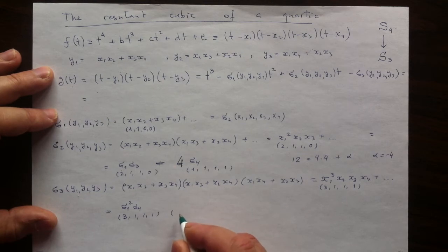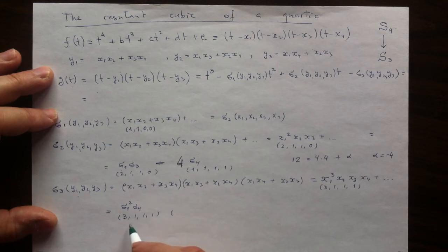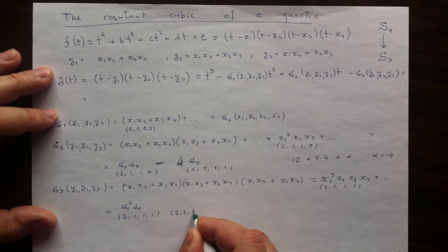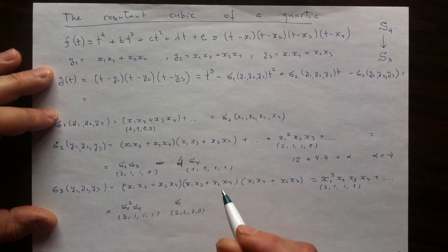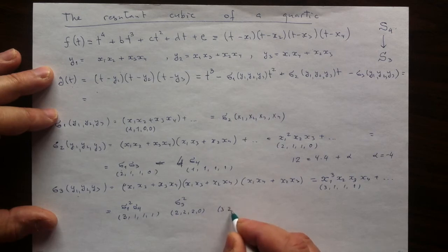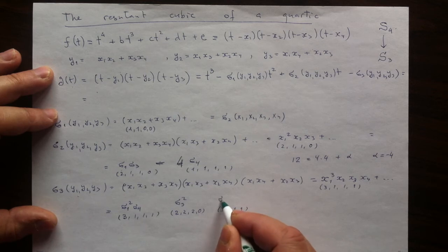For the template, I have 3 and 1 and 1 and 1, giving me σ1 squared σ4. Then I could have 2, 2 and 2 and 0. That is just the highest vector for σ3 squared. And I could have 3 and 2 and 1 and 1, which will correspond to σ2 σ4.